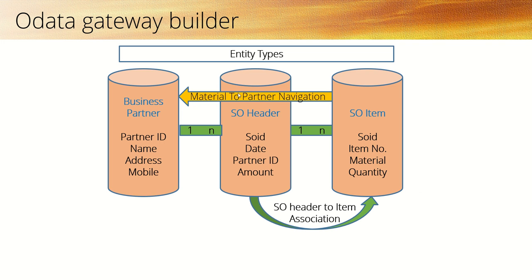For example, in a data model we have three entities. One is Business Partner, which contains the partner ID, name, address, and many other fields. Then we have SO Header with SO ID as the key field, date, partner ID, amount, and other fields. The third entity type is SO Item, which contains SO ID and item number as the primary key, material, quantity, and other fields.